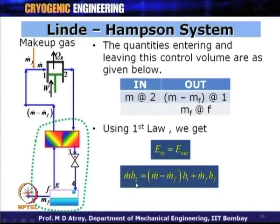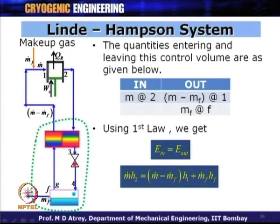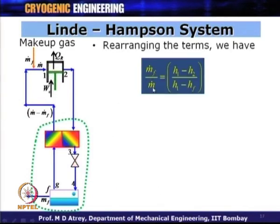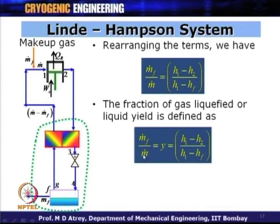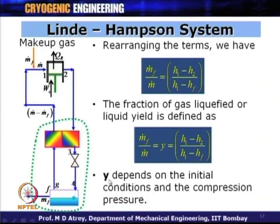Applying the first law — energy in equals energy out — we get: m-dot × H_2 = (m-dot − m-dot-f) × H_1 + m-dot-f × H_F. Rearranging, the fraction of gas liquefied (liquid yield) Y = m-dot-f / m-dot = (H_1 − H_2) / (H_1 − H_F). H_1 and H_F depend on initial conditions, while H_2 depends on the compression pressure.